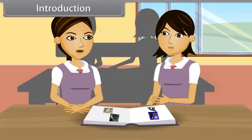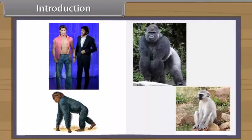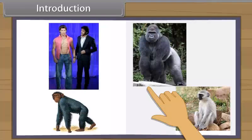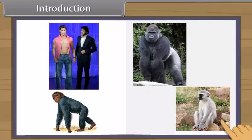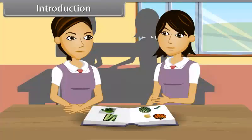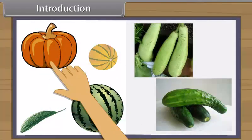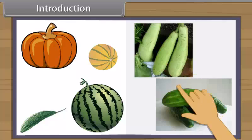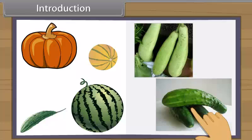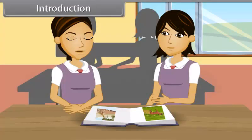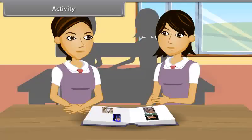But within a genus, there are some similarities. Human beings, chimpanzees, gorillas and monkeys are all alike. Similarly, among plants, melon, watermelon, bitter gourd, pumpkin, bottle gourd, cucumber, etc. have many similarities. But when we study two genera, we find they are entirely different.